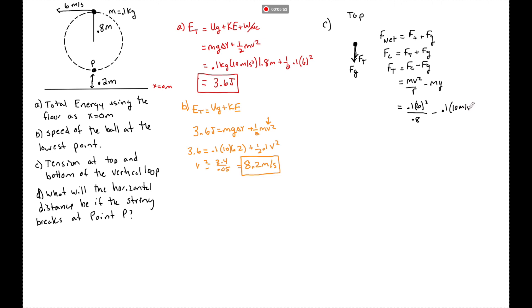minus 0.1 times 10. That's 10 meters per second squared. That's what I use for little g in this course. That is going to be equal to 3.5 Newtons. Now,